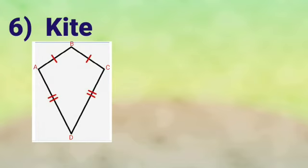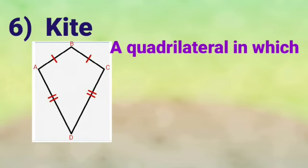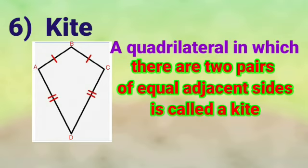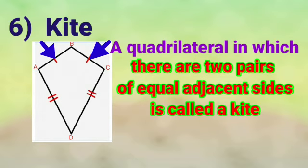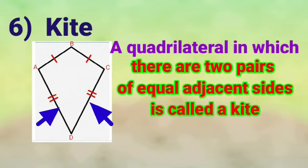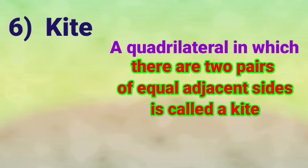Number 6: It is kite. A quadrilateral in which there are two pairs of equal adjacent sides is called a kite. Here in this figure these two sides are equal, and these two adjacent sides below are also equal. You must have seen a kite in your daily life — it's just like that. So these are the properties of some quadrilaterals.